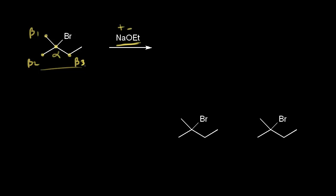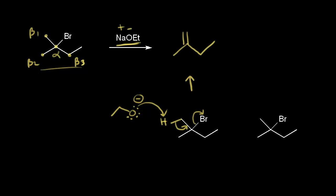Sodium ethoxide is our strong base, and it's going to take a proton from one of our beta carbons. Let's think about beta one first. I'll draw in a proton on the beta one carbon and the ethoxide anion with a negative one formal charge on the oxygen. The ethoxide takes this proton, these electrons move in to form our double bond, and at the same time these electrons move off onto the bromine. Taking a proton from beta two gives the same alkene.